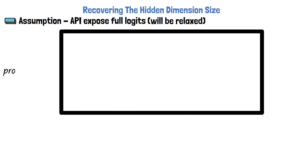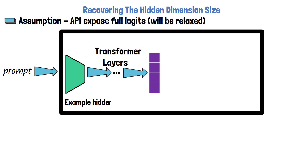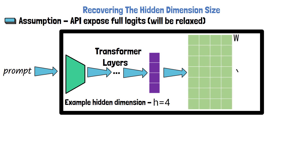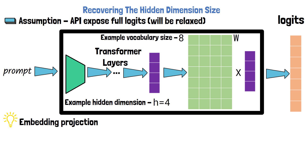To understand how this is possible, let's first recall what happens in the embedding projection layer. In a transformer model, when we feed it a prompt, the model processes the prompt via all of the transformer layers until we reach the final embedding projection layer. The input for the embedding projection layer is a vector of hidden states in the size of the hidden dimension — in the simple example here the size is 4 — and the embedding projection layer projects this vector to the tokens in the vocabulary via a matrix multiplication. With 8 possible tokens in the vocabulary, the matrix is of size 8 by 4, so after this multiplication we get a logit for each token. A key observation is that this matrix has a rank of at most 4, which is the hidden dimension size, since the vocabulary size is larger than the hidden dimension size, and this holds for real models as well.